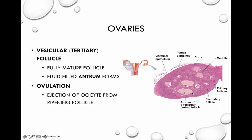We want to reach the stage of a vesicular or tertiary follicle — these are what we consider fully mature follicles. The fluid-filled antrum that forms is a nutrition source, but it also eventually leads to the rupture of the maturing follicle. That rupture is what allows the oocyte to be ejected, and this process is referred to as ovulation. We'll discuss ovulation and follicular development further when we cover the physiology on Monday.